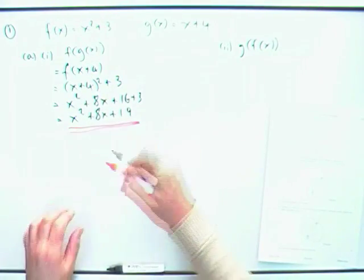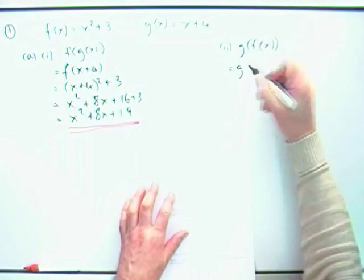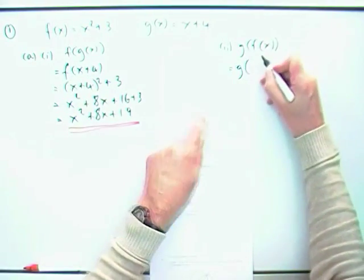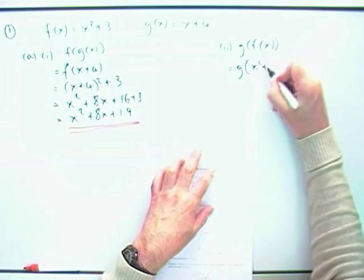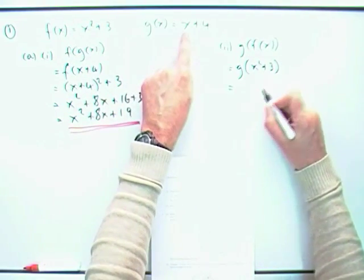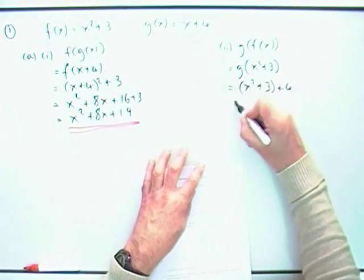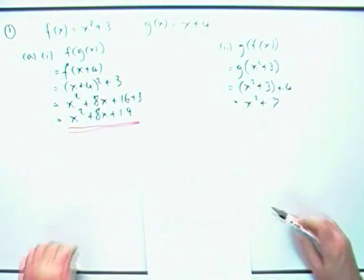For that part, this one, this will be easier. Here, g, what's it got to act on? f of x, which is x squared plus 3. What does g do? Whatever it gets hold of, it takes it, right, so it's taking this x squared plus 3 and adds on 4. Well, that's just going to be x squared plus 7.